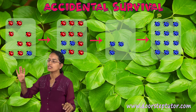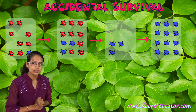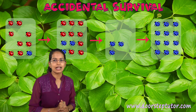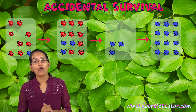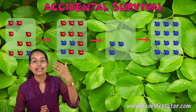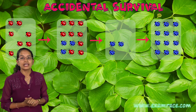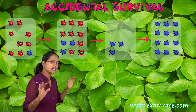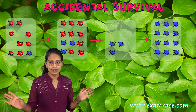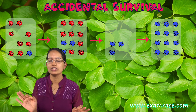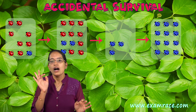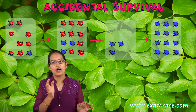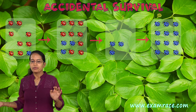This was another case that Darwin tried to explain as accidental survival, where he explained that it was just an accident that the red population vanished and the blue beetles could survive.